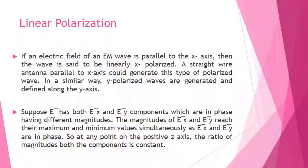So at any point on the positive Z axis, the ratio of magnitudes of both components is constant. This is called linear polarization.